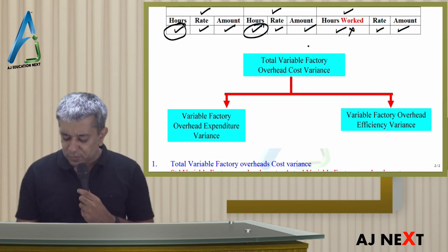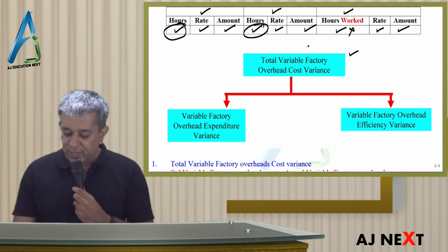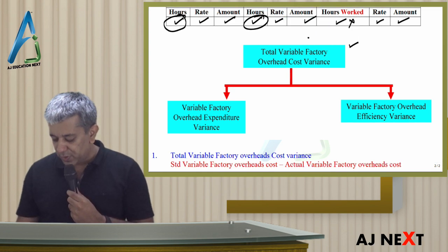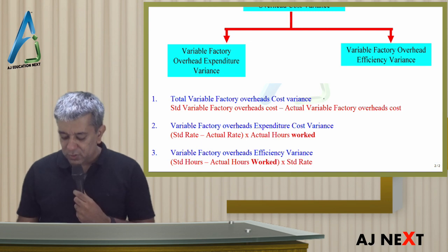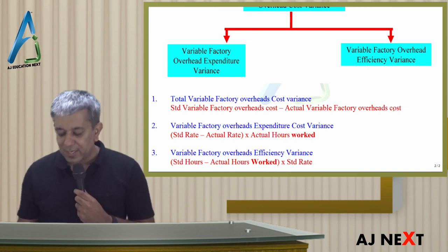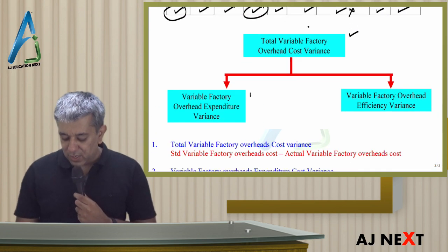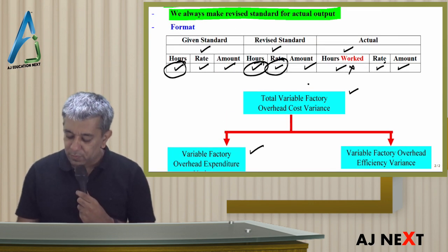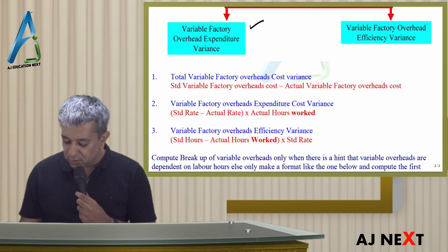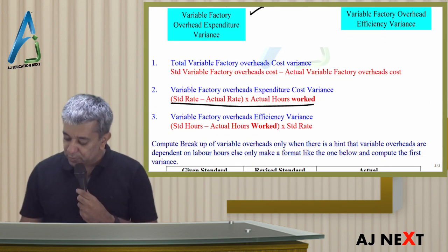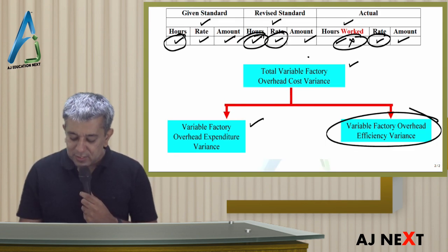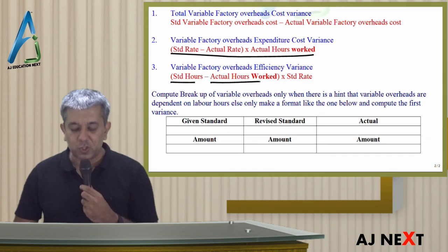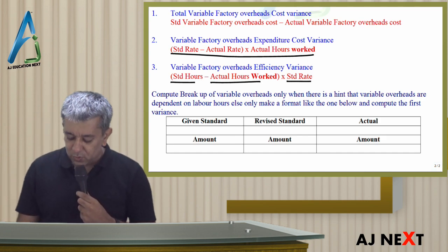There are 3 variances here, which are very simple. First: Total Variable Factory Overheads Cost Variance — how much the electricity bill should have been versus how much it actually was — Standard variable factory overheads cost minus actual variable factory overheads cost. Second: Variable Overheads Expenditure Variance — this is similar to your rate variance — Standard rate minus actual rate, into actual hours worked. Third: Efficiency Variance — Standard hours minus actual hours, into standard rate. Obviously, hours here means hours worked.